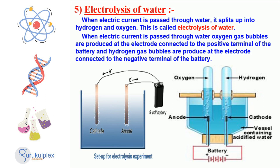The oxygen is produced at the electrode attached to the positive terminal of the battery, while the hydrogen is created at the electrode connected to the negative terminal of the battery. This method has many uses, such as energy production, water purification, and waste disposal.